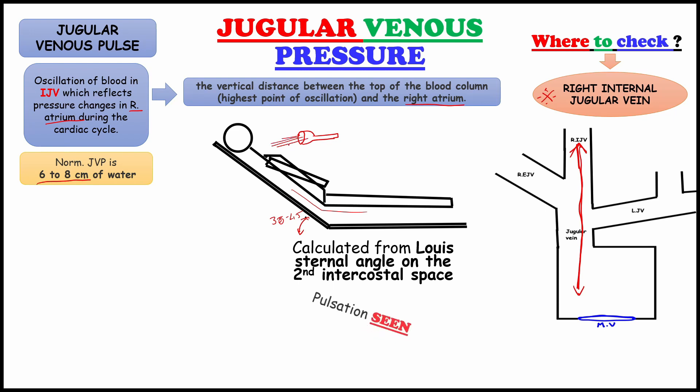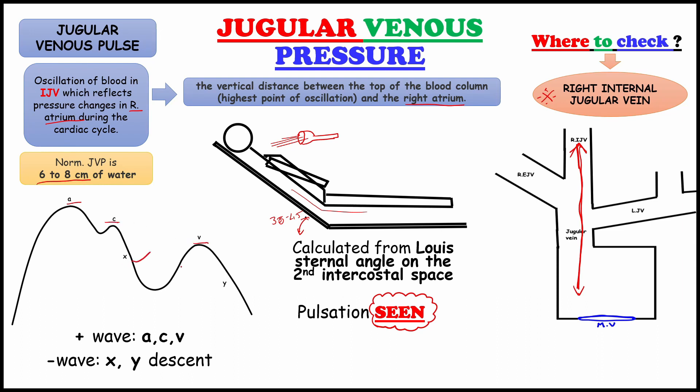Again, I am saying it is very important that the pulsation only can be seen. We can't palpate. Let's move to jugular venous pressure wave. We can see three positive waves: A, C, V and two negative waves X, Y descent. In general jugular venous pulse always fall on inspiration in normal person. If it is rise, it is pathology.